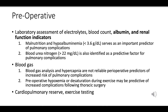Albumin levels below 3.6 grams per deciliter indicate hypoalbuminemia, which can signal malnutrition — an important predictor of pulmonary complications post-surgery. A blood urea nitrogen, or BUN, level greater than 22 milligrams per deciliter is seen as a predictive factor for potential pulmonary complications post-surgery.